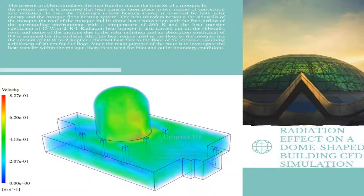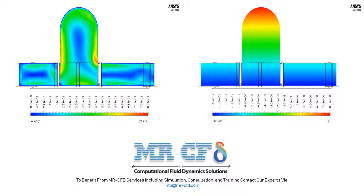Then the radiation effect on a dome-shaped building CFD simulation will be investigated. The present problem simulates the heat transfer inside the interior of a mosque. Heat transfer takes place in two modes: convection and radiation. The building's indoor heating source is powered by both solar energy and the mosque floor heating system. The heat transfer between the side walls, the roof, and the dome has convection with the free airflow of the surrounding environment at a temperature of 390 K and a heat transfer coefficient of 10. Radiation heat transfer is also carried out on the side walls.